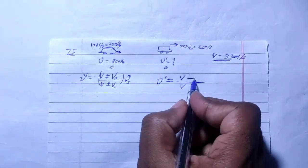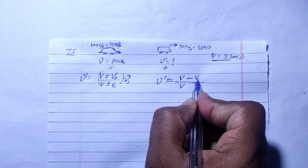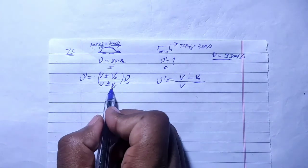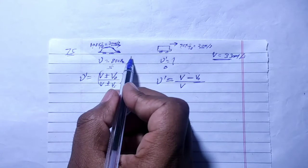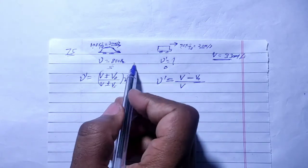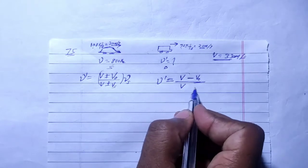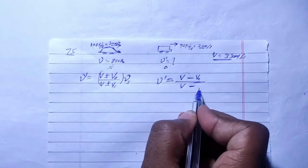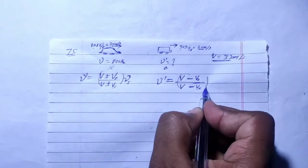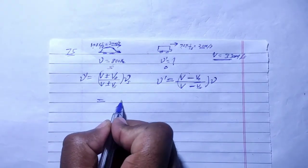The source is behind (the rear car), and the observer is ahead. Since the source is chasing the observer, we apply minus for the observer's speed in the numerator and minus for the source's speed in the denominator. We then substitute the original frequency value and put V₀ = 20.